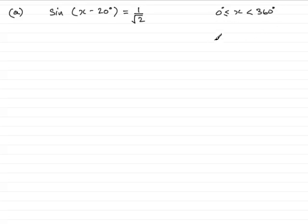Now to do this, this is a good example which illustrates where we have to change the range. You'll notice that the angle we've got here is x minus 20 degrees and we've got the angle x just here, not x minus 20.